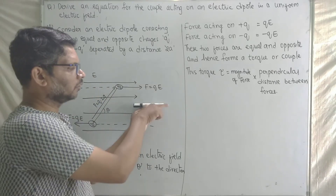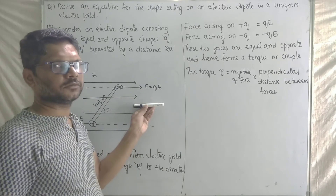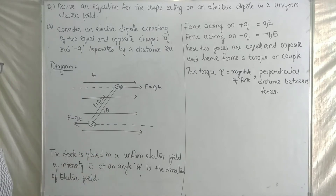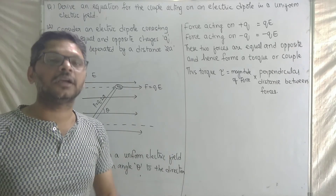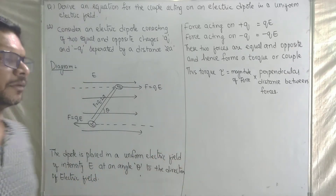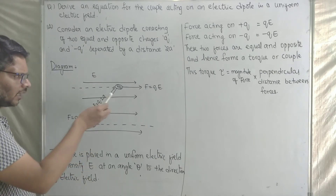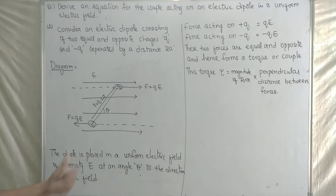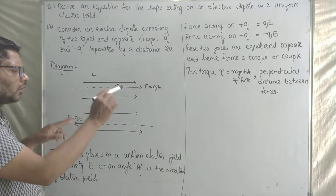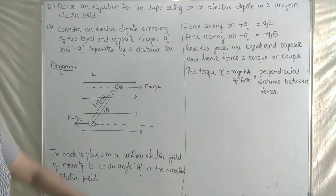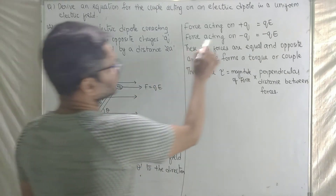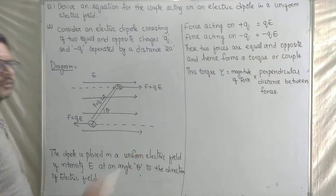Since the two forces are equal, opposite, and their lines of action are not the same, they form a couple or torque. The force acting on plus Q equals QE, and the force acting on minus Q equals minus QE. These are equal and opposite, so they form a couple.